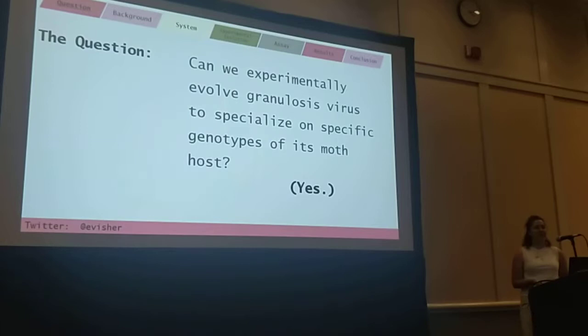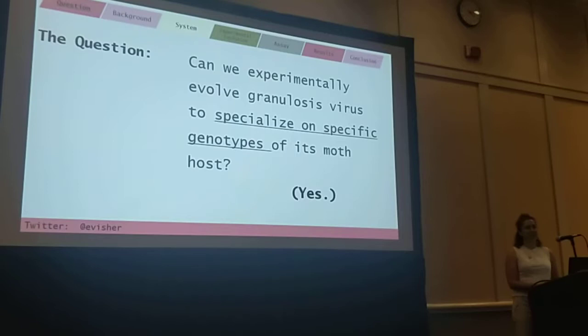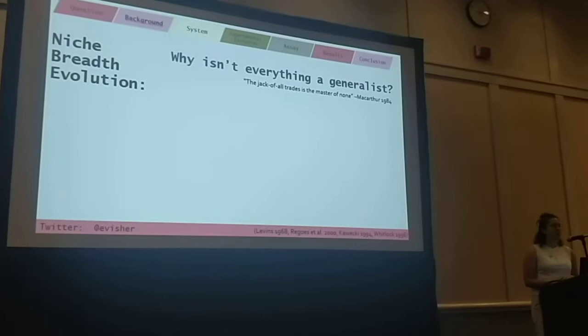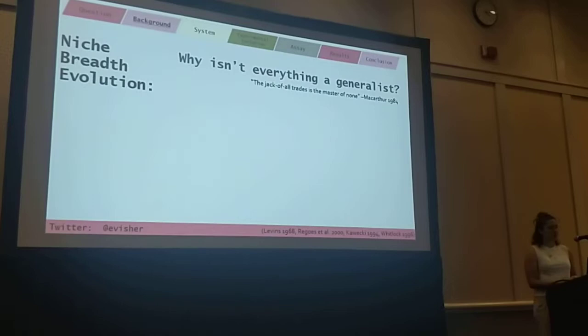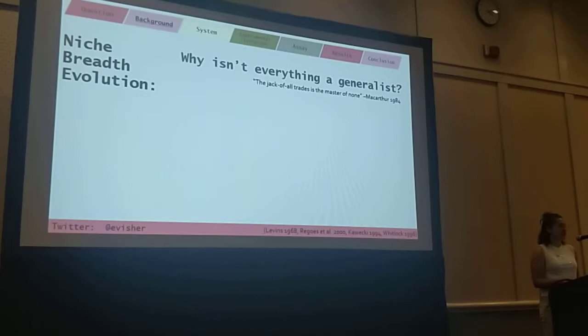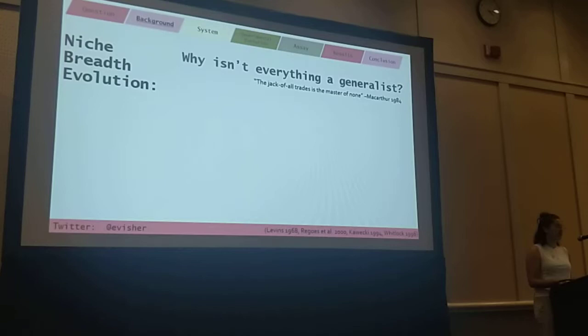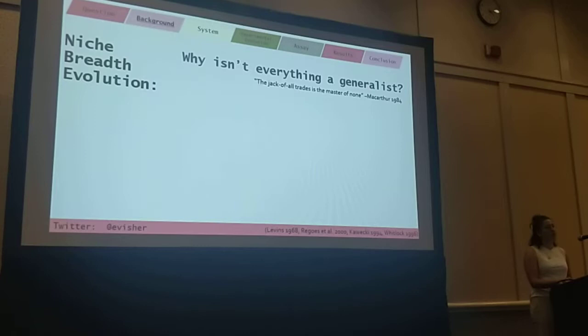Central to this project is this idea of specializing on specific genotypes of a host. This question of host specialization essentially boils down to a problem of niche-breadth evolution. The central question of niche-breadth evolution is, why isn't everything a generalist? Clearly it would be best for an organism to just be the best at everything, but that would lead to one super-fit species, which is clearly not what we see in nature. MacArthur applied a classic proverb: the jack of all trades is the master of none — essentially that a generalist must be mediocre on any one environment compared to a specialist.